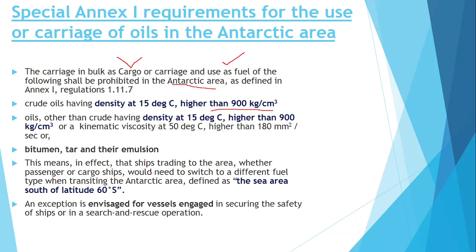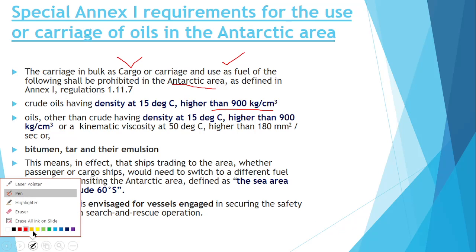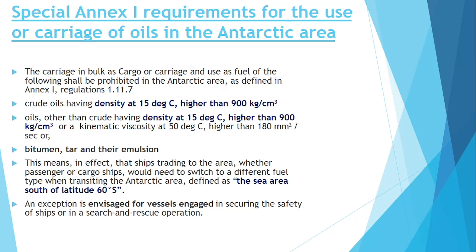Ships trading in the Antarctic area — whether passenger or cargo ships — would need to switch to a different type of fuel when transiting into the Antarctic area, defined as the sea area south of latitude 60°S. This means you cannot burn crude oil, bitumen, or heavy oil in the Antarctic area. An exception is provided: if you are carrying out a search and rescue operation, you may be permitted to use such fuels.